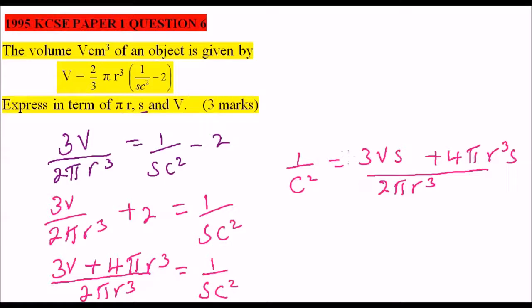Then we cross multiply. Cross multiply C and our expression, so we have our C on one side equals to, now C will come to be the numerator here, so this will come here, and the numerator will come down. This is C squared, it is equals to, I have 2 pi R cubed, all this is divided by 3VS plus 4 pi R cubed S.